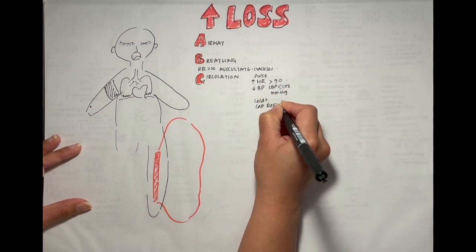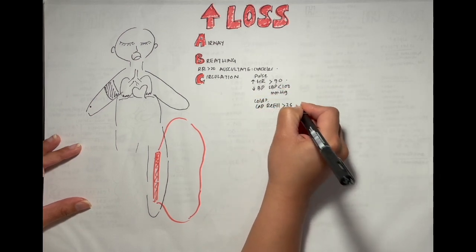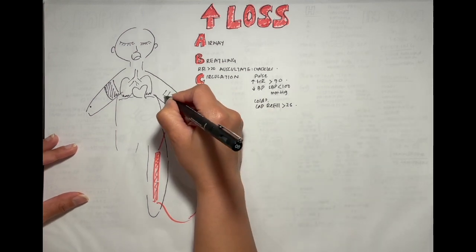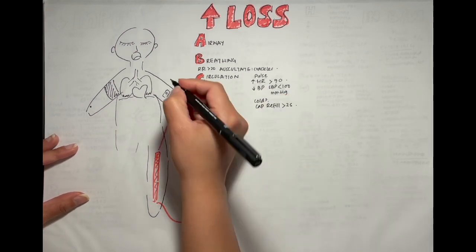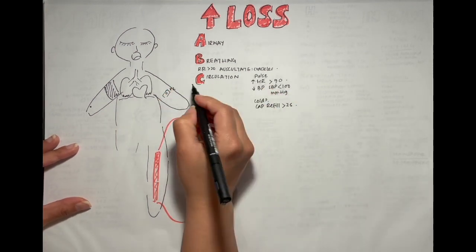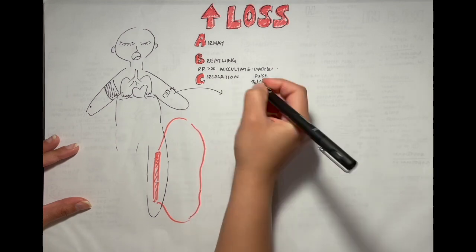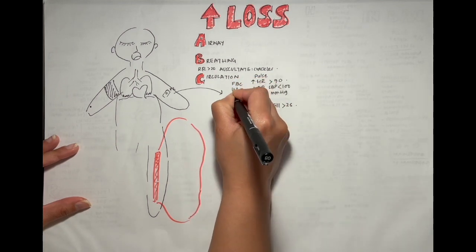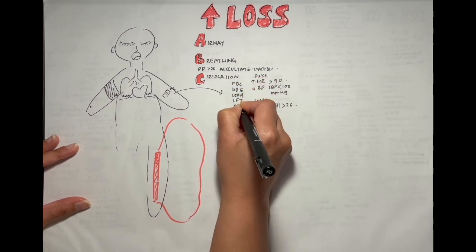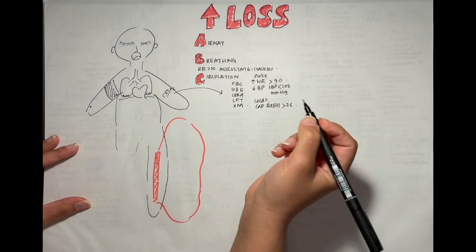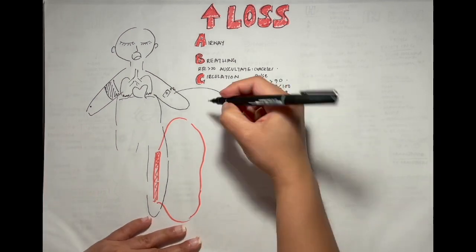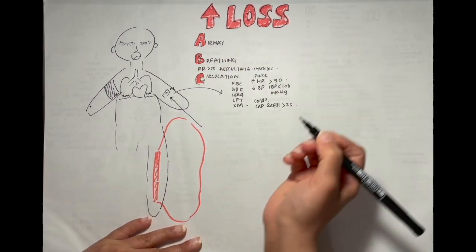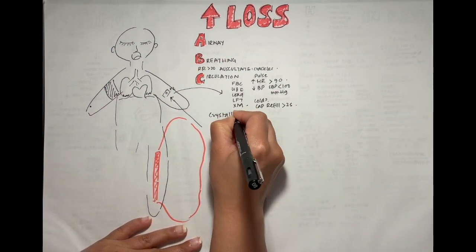So what do you do? You insert two large bore IV cannulae in their antecubital fossa and take bloods. You'll take a full blood count, urea and electrolytes, coagulation, liver function tests, and bloods for cross-matching. In the other arm, you'll run fluids.